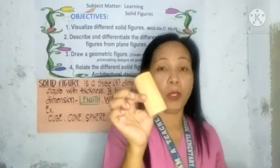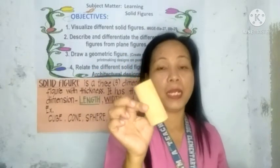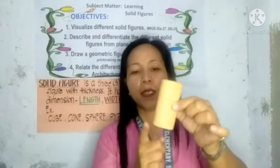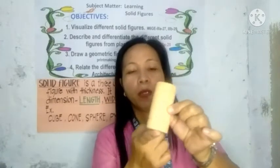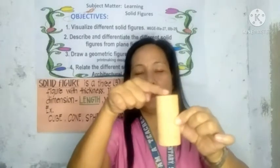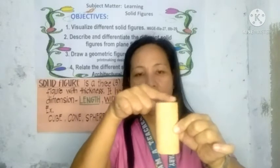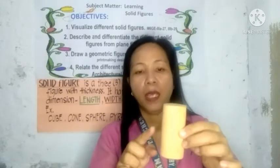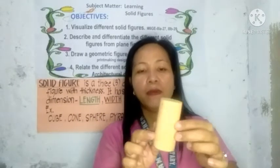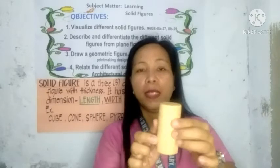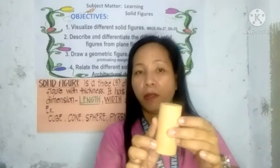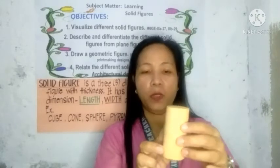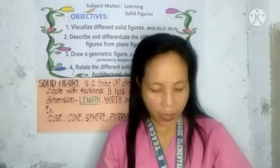This is a cylinder. A cylinder has two circular bases — the top and the bottom. As you observe, the body is also in a circular shape.